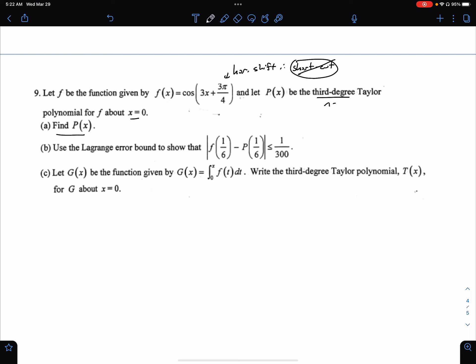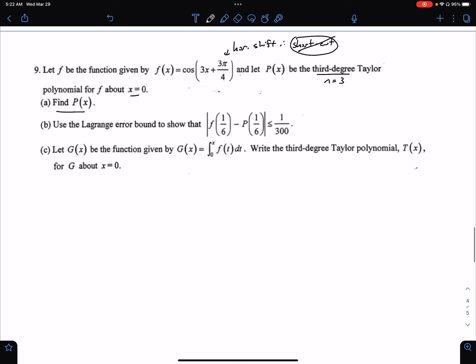So we want a third-degree Taylor, so we're looking at n equals three. So we have to find three derivatives for this one. Let's go ahead and do this. Once we're part A,